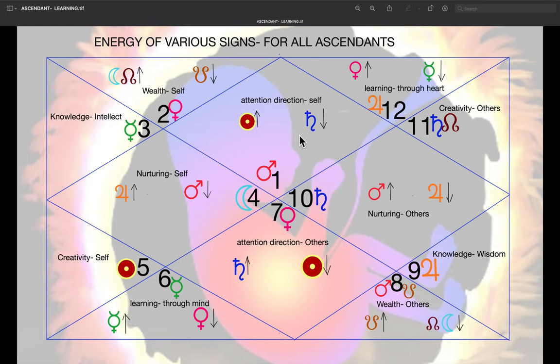Again, fifth and eleventh are again neutral, like three and nine. That is Leo and Aquarius. They don't have any exaltation-debilitation in them. These four signs, as you can see, have no exaltation-debilitation.